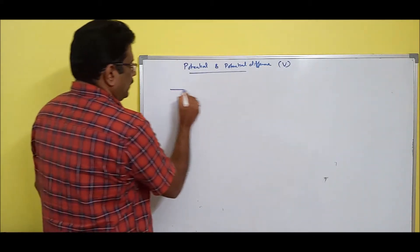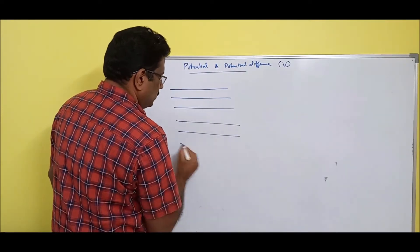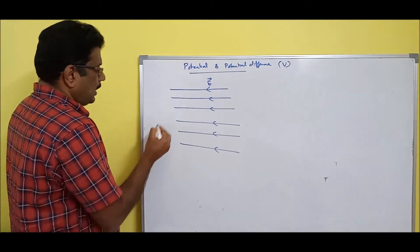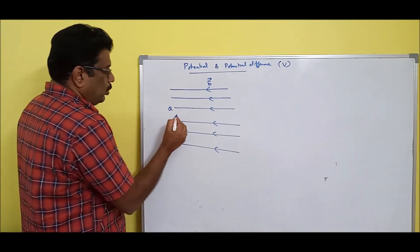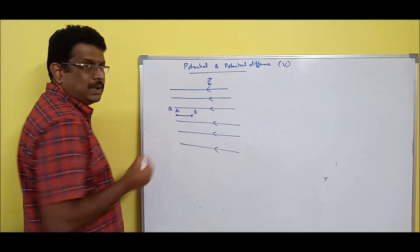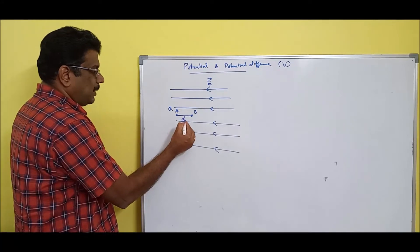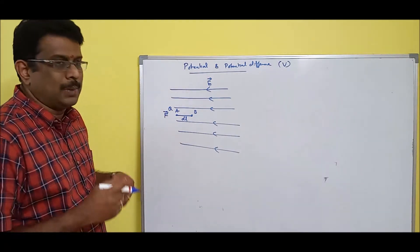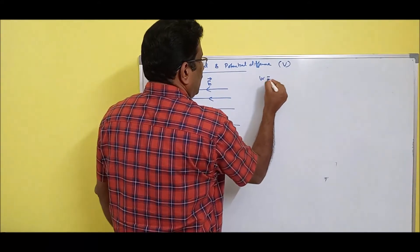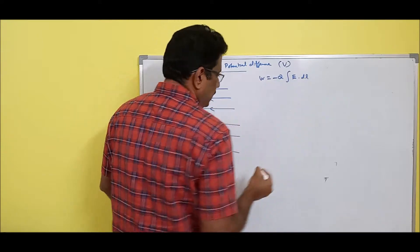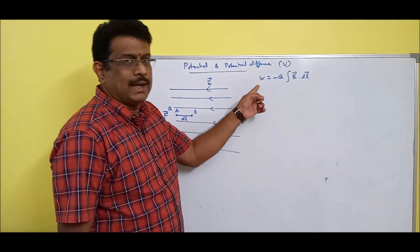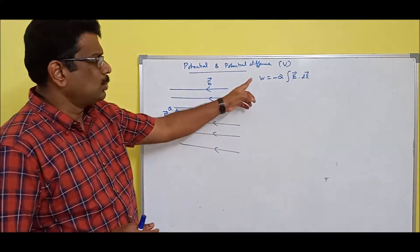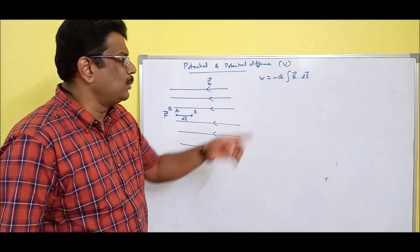Just a recall: if there is an electric field in a certain direction and you have a charge q moving from one point a to another point b, over a length dl, then the work done to move from a to b is: work done equals minus q times the integral of E dot dl. Both E and dl are vectors, so their dot product gives a scalar — work done is a scalar. Work done is the energy spent in moving a charge.